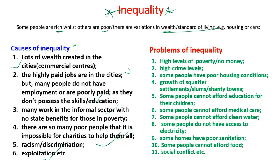Racism, discrimination and exploitation have also led to inequality. The problems of inequality include: high levels of poverty, high crime rates, poor housing conditions, growth of squatter settlements, slums and shanty towns. Some people cannot afford education for their children, medical care, clean water, electricity, good sanitation or good food. This leads to homes being in a poor state and social conflict within the community.